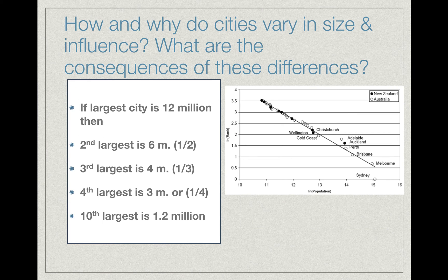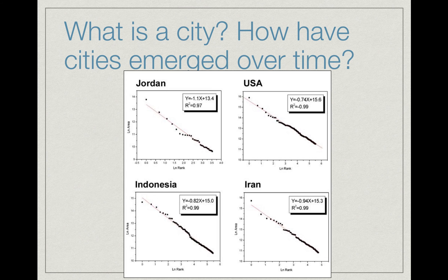Here's another example: in New Zealand and Australia, you can see the cities generally follow that downward sloping logarithmic graph. Jordan, the United States, Indonesia, Iran — these are all following rank-size rule. I don't like to make generalizations because there are certainly exceptions across the board, but on the whole, rank-size rule is an indication of the greater distribution of resources.